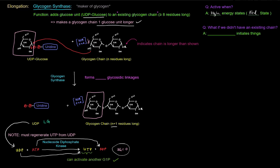Now, earlier I mentioned that this adds to an existing glycogen chain. So the question might be then, what if we didn't have an existing chain? Well, that's when this dude called glycogenin initiates things. And the way I remember that is that there's glycogen and then 'in' initiates. I actually just came up with that. Anyway, so glycogenin initiates things if we don't already have an existing glycogen chain.